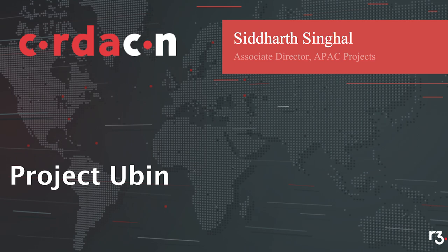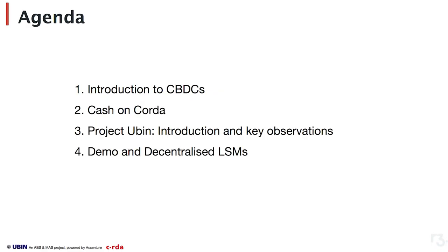Thanks. So before we jump into Project Ubin, I thought it would make sense to spend a couple of minutes introducing CBDCs — central bank digital currencies — what they are and what they mean. Next, we'll talk about cash on Corda, which is fiat currency represented on ledger on our DLT platform, Corda. And finally, we can jump into Project Ubin — the introduction, what was achieved, and some of the key observations. Let's dive in.